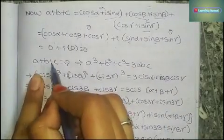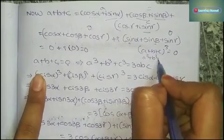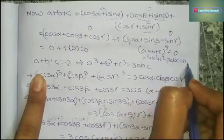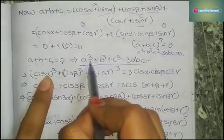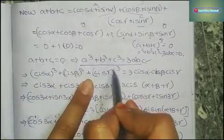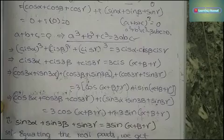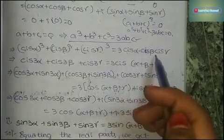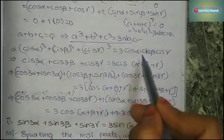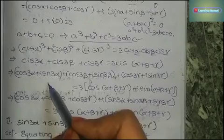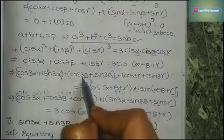Since a + b + c = 0, cube both sides. Expanding (a+b+c)³ = 0 gives a³ + b³ + c³ − 3abc = 0, so a³ + b³ + c³ = 3abc. Now a³ = cis³α (i.e., cis 3α by De Moivre's Theorem), similarly b³ = cis 3β and c³ = cis 3γ. The RHS becomes 3·cis(α+β+γ). So cis 3α + cis 3β + cis 3γ = 3·cis(α+β+γ).